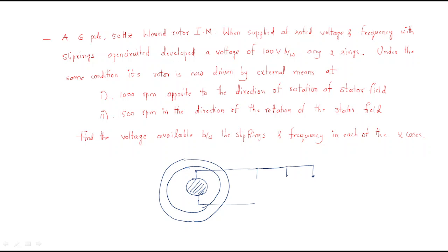With the slip rings open-circuited, the supply is given to the stator — that is a 50 Hz supply. The rotor will rotate and develop a voltage of 100 volts between any two slip rings. This is the standstill condition voltage.